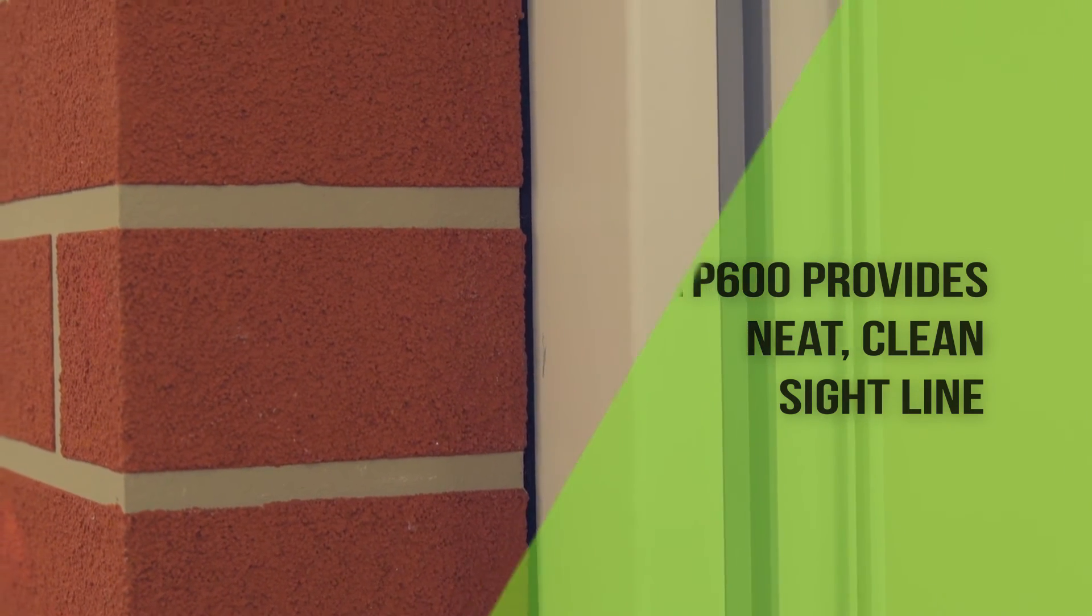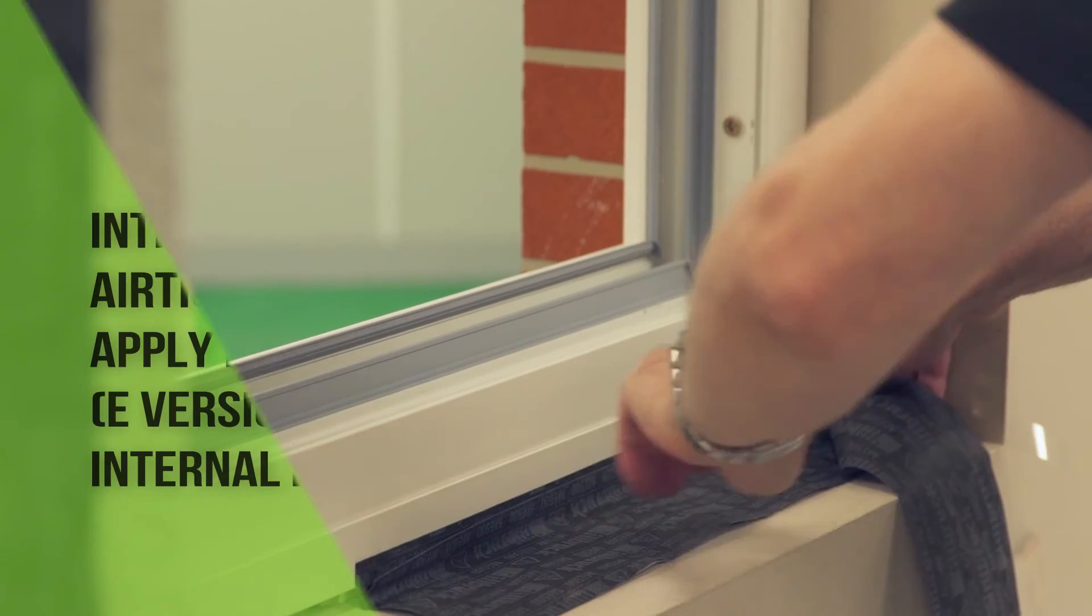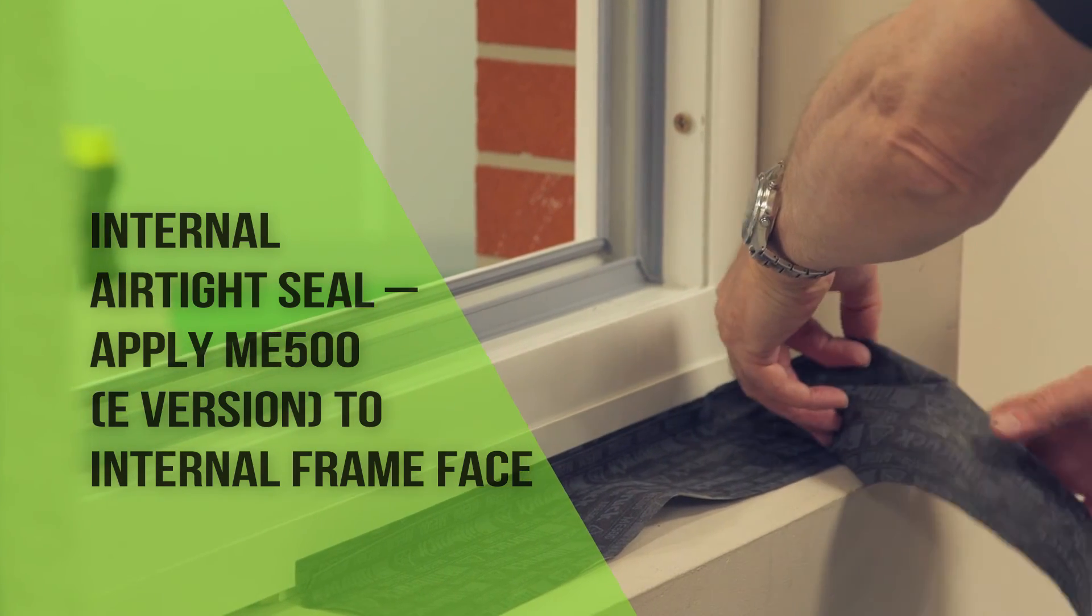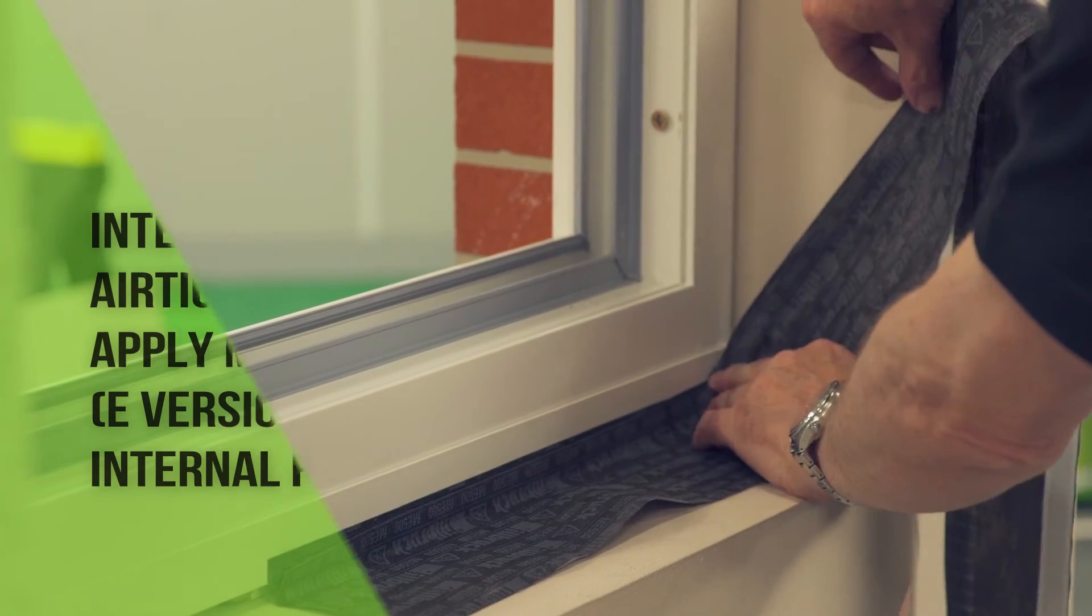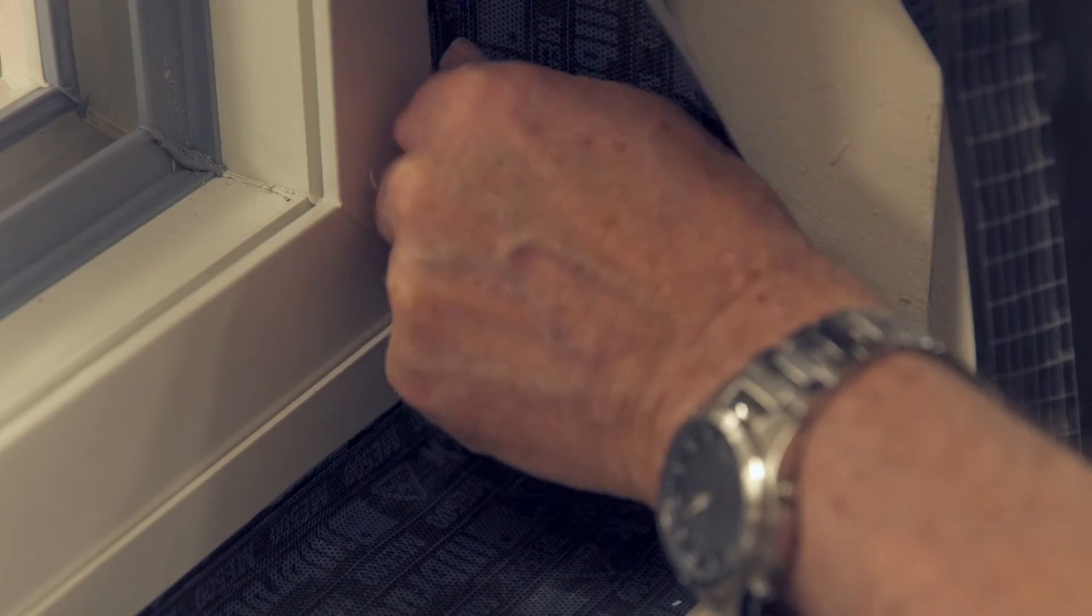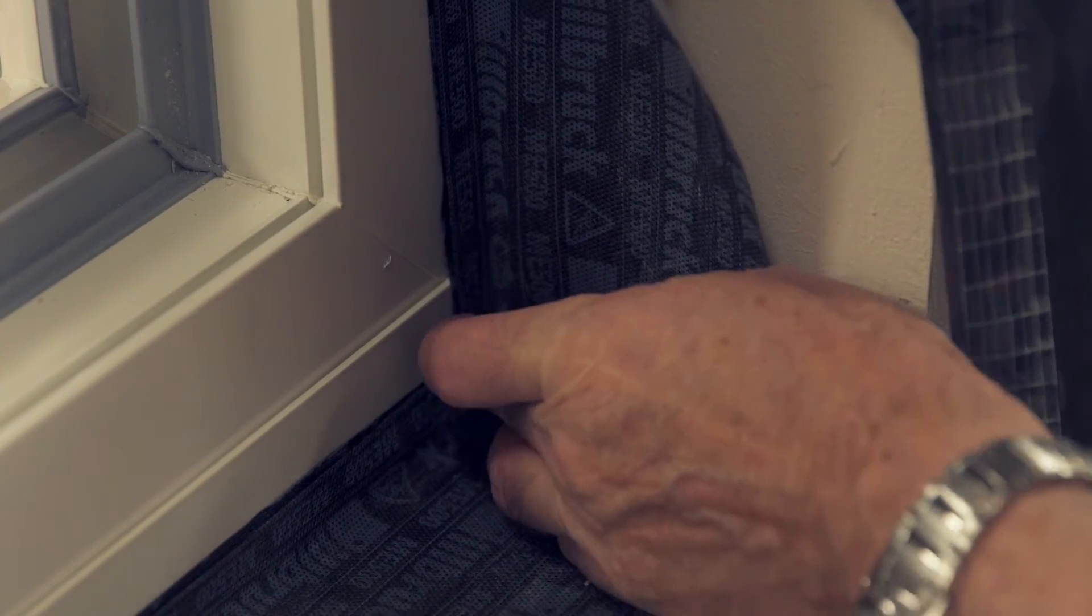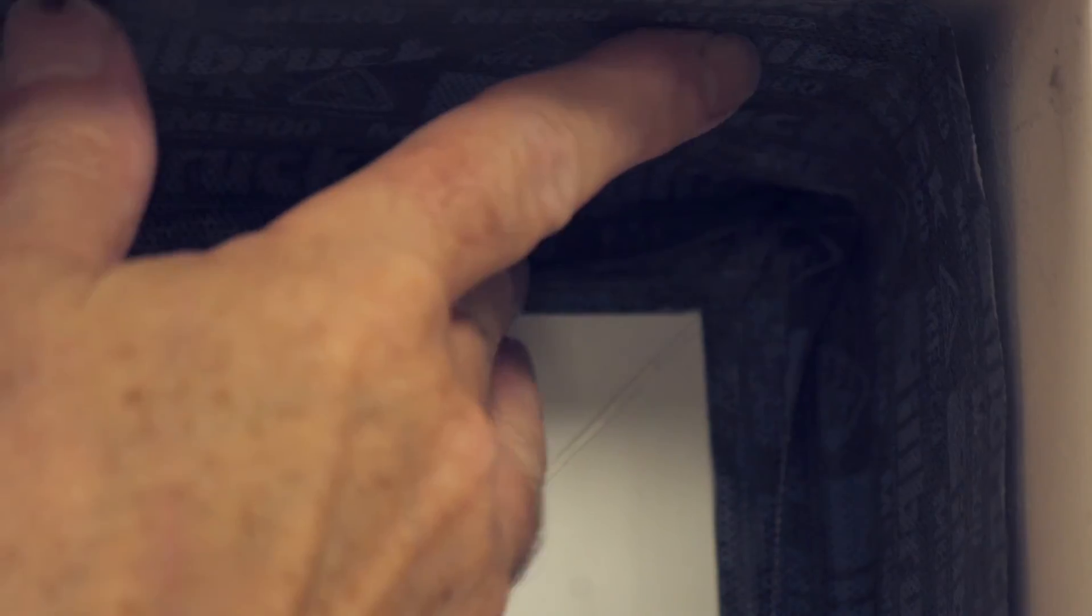For the airtight seal, Ilbrook ME500 Duo Flexible Window Membrane E can now be applied to the internal frame face. The membrane is bonded with the acrylic self-adhesive strip, locating onto the frame by a minimum of 10 millimetres, whilst ensuring that this area will be subsequently covered by the internal finishes.